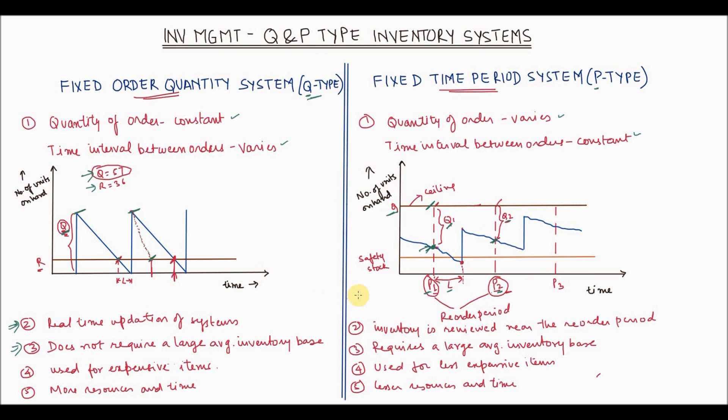Whereas in P type system, if for a particular period your demand is very high, you may end up completely depleting your inventory and stock out situation may happen. So in this case, typically the average inventory is kept as a large base.